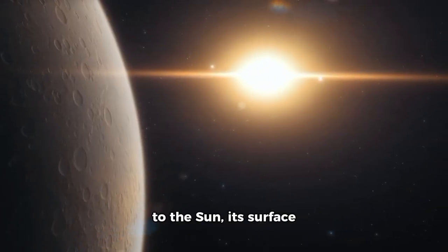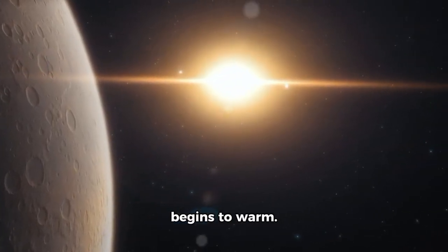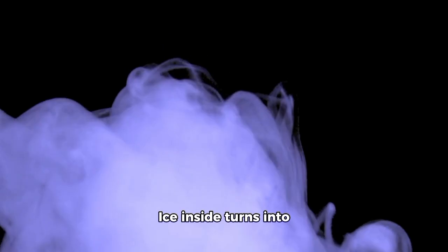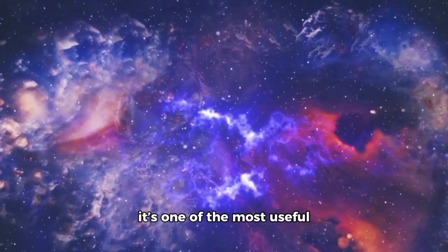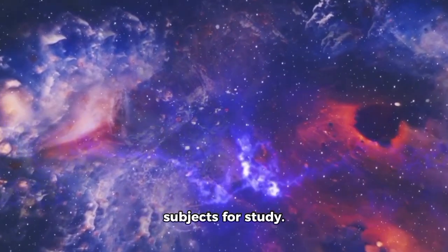When a comet gets close to the sun, its surface begins to warm. Ice inside turns into gas, resulting in a glowing cloud around it. This is called a coma, and it's one of the most useful subjects for study. The gas and dust in a coma inform scientists of what the comet is made of and how much material it's losing.